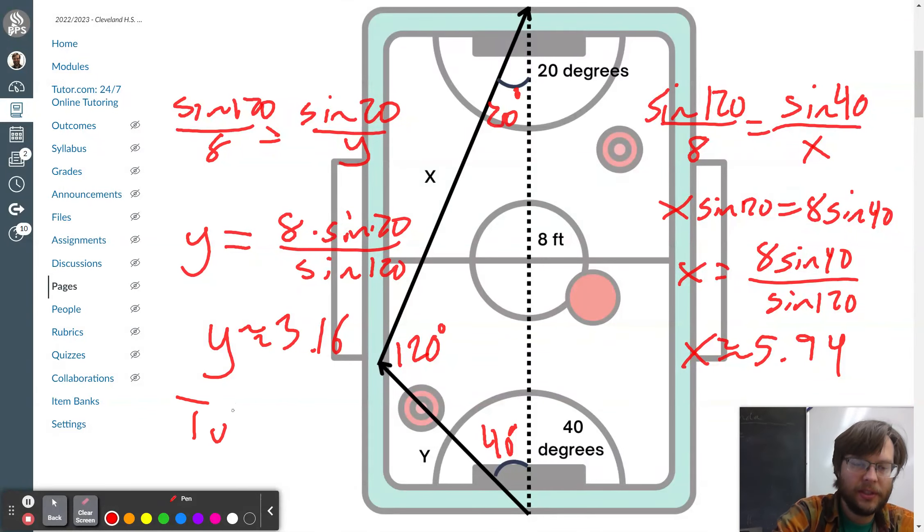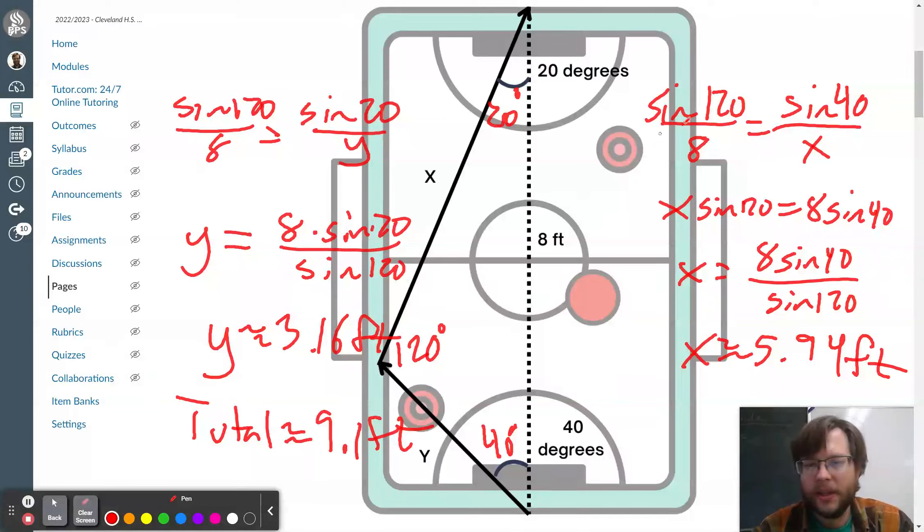If you add those together, you get approximately 9.1. So, the total distance is approximately 9.1. Again, these are all measured in feet, so make sure that you're giving your units of measurement on it. So, that was one of the stations we did.